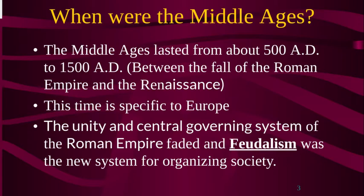The idea of a central government really falls apart after the Roman Empire collapses. People are experiencing anarchy. They're on their own. There's really no large government, army, or system to protect them. Once the Roman Empire falls due to mostly barbarian invasions from the Goths, the Ostrogoths, the Visigoths, the Roman Empire falls, people have no one to protect them, and they're terrified.